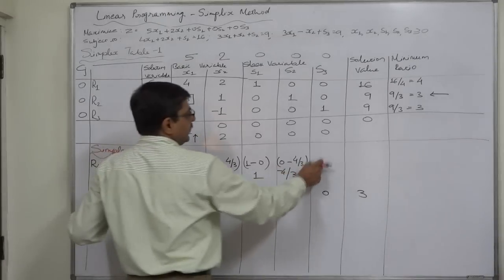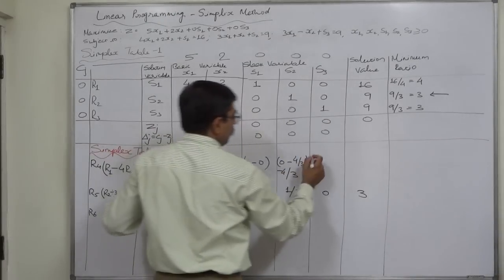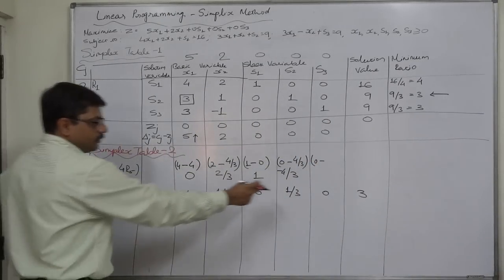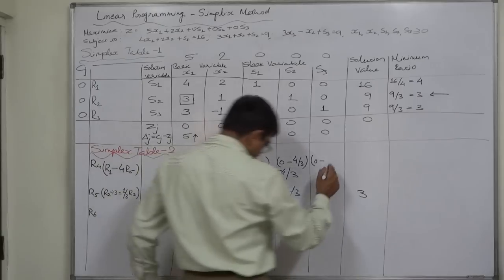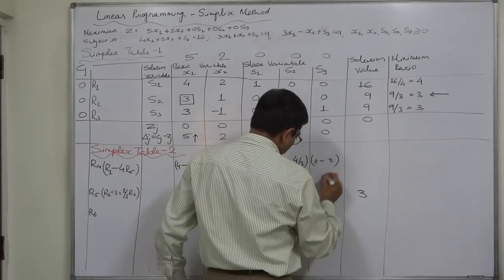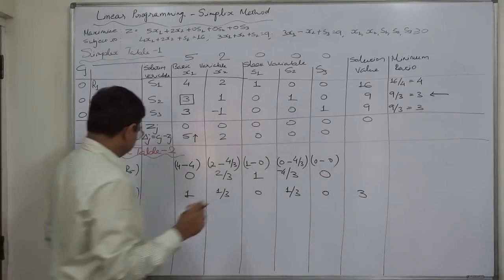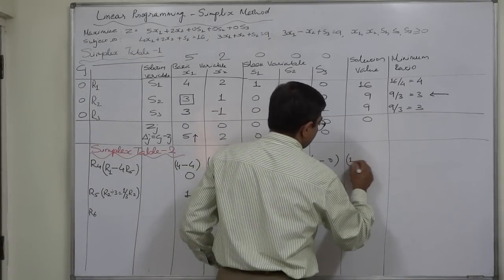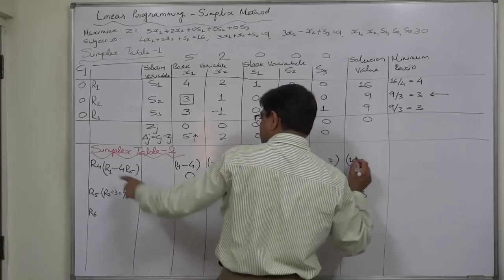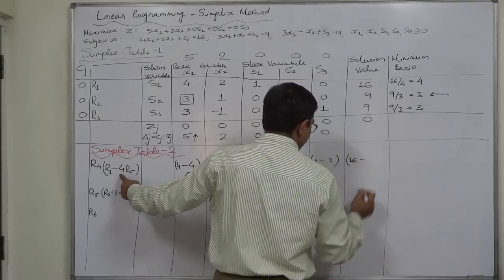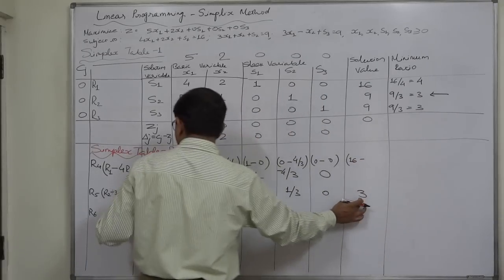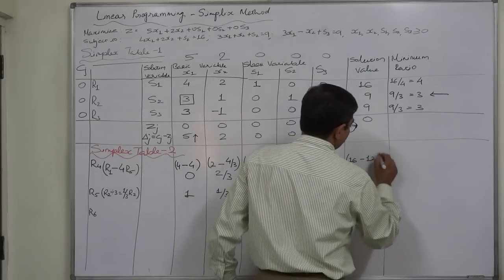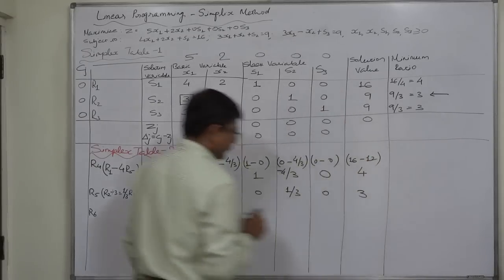R1 in this cell is 0, minus 4 into R5 which is 0, so 0 remains as it is. R1 in this cell is 16, minus 4 into R5 which is 3, so 4 into 3 is 12, giving us 4 here.